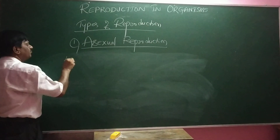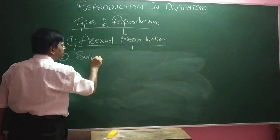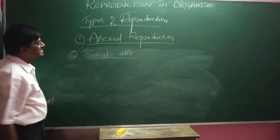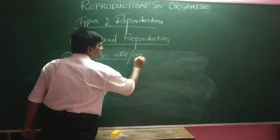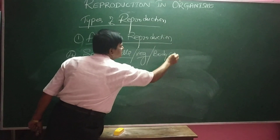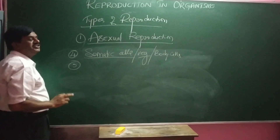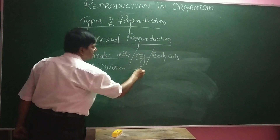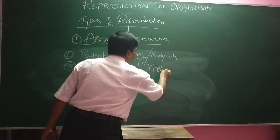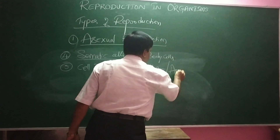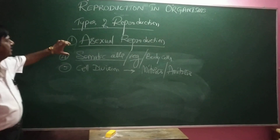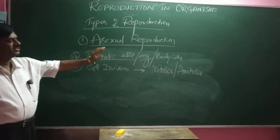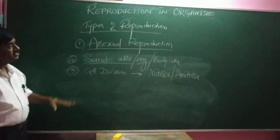Formation of offspring takes place from the somatic cells. Somatic cells may also be called vegetative cells or body cells. In these vegetative cells, the cell division is always mitosis or it may be amitosis. Asexual reproduction takes place in vegetative cells, divided by mitosis in some organisms and amitosis in the majority.